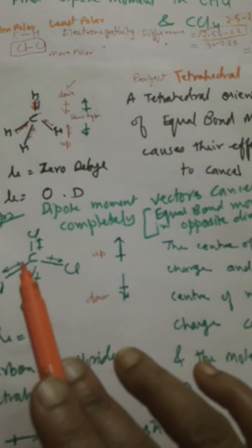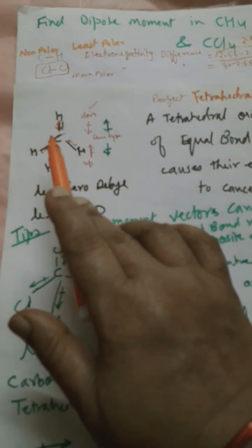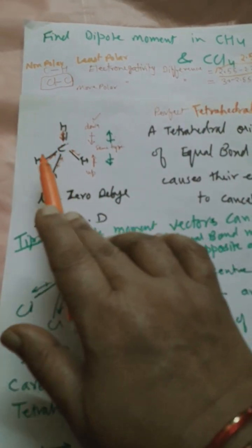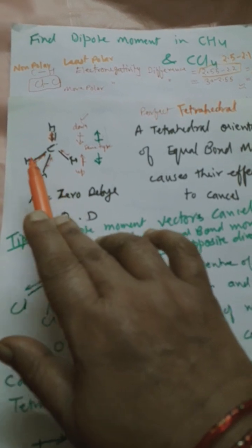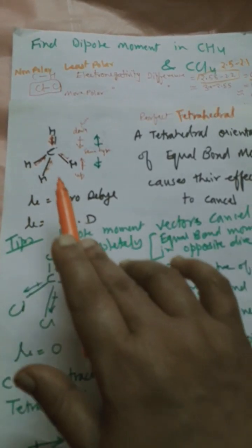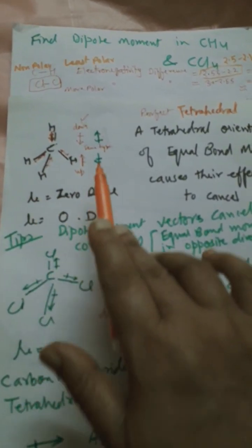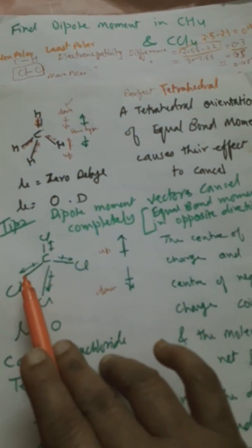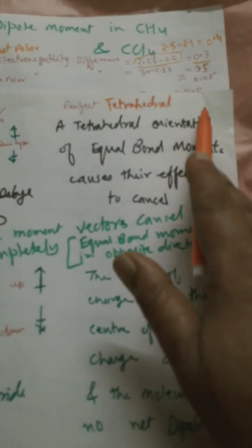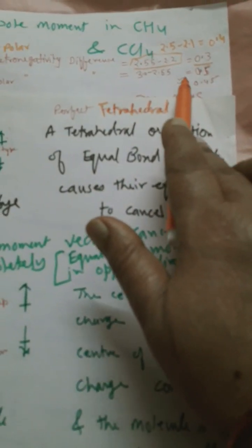Now we will discuss electronegativity difference. The CH bond is less polar and it is cancelled out, so the dipole moment is 0. The CCl bond, although polar with an electronegativity difference of about 0.5, has its dipoles directed opposite to each other.